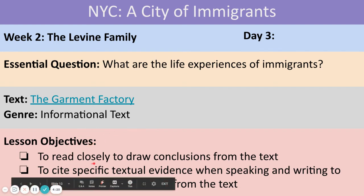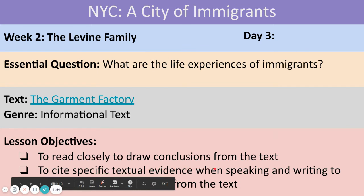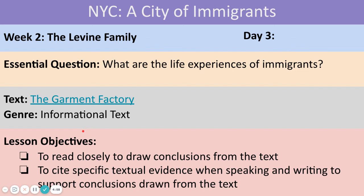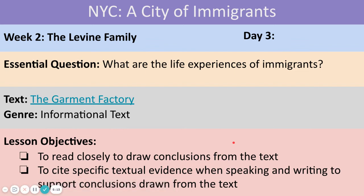Good — to read closely to draw conclusions from the text. Like yesterday where we drew inferences from the text, today we're going to be drawing conclusions, finding final thoughts about what the text can tell us about the experiences of the Levine family. Can somebody please read the second lesson objective? Good — to cite specific textual evidence when speaking and writing to support conclusions drawn from the text. Students should be practicing citing evidence, finding quotes and examples in the text to support their thoughts and make connections.